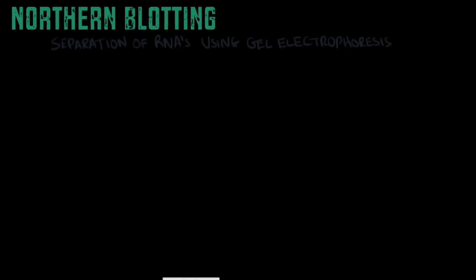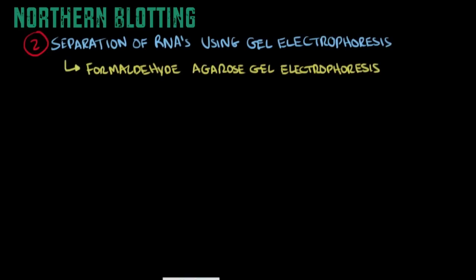Once we extract the RNA mixture from those cells, the next step is to separate the RNA molecules using gel electrophoresis. The specific type used to separate RNA molecules is known as formaldehyde agarose gel electrophoresis.